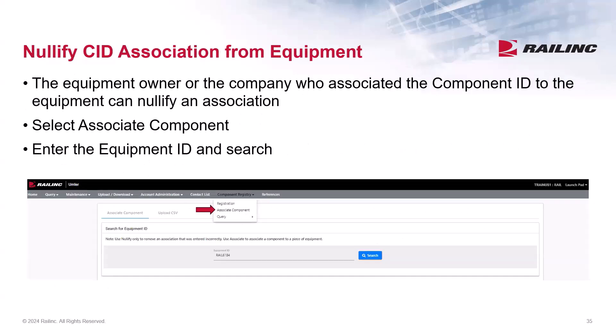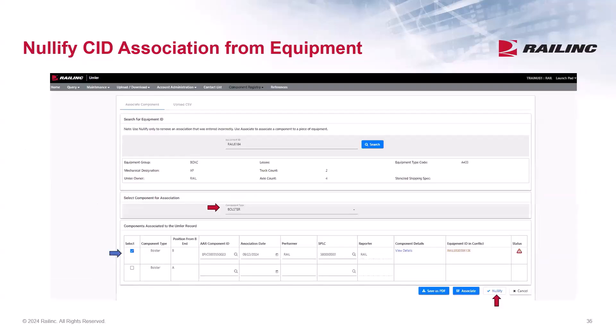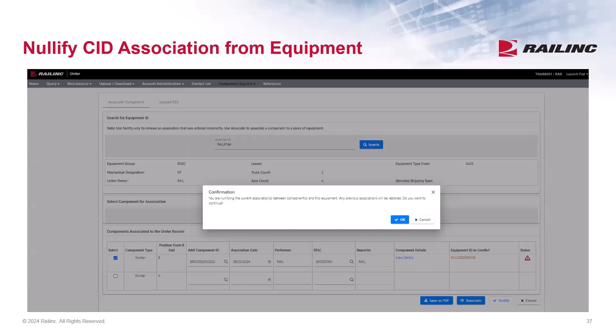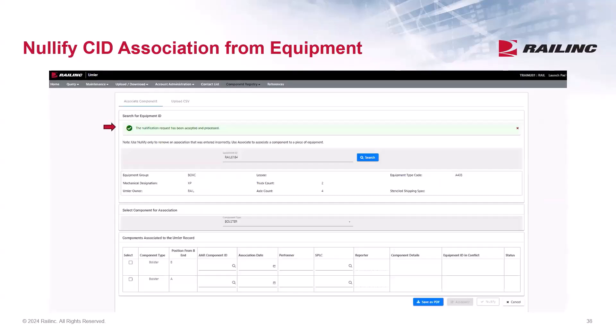If there is an incorrect component associated to the equipment, users can perform a nullification, which removes the component association from the equipment. The equipment owner or the company who associated the Component ID can nullify it. Select Associate Component, enter the Equipment ID, and search. From the drop-down menu, select the Component Type and the associated Component ID you wish to nullify. The nullify option is not available until you select a checkbox beside the associated component. You will receive a pop-up message to confirm you want to nullify the association, then press OK. If the nullification was accepted, you will receive the confirmation message, and the coupler is no longer associated to this car.